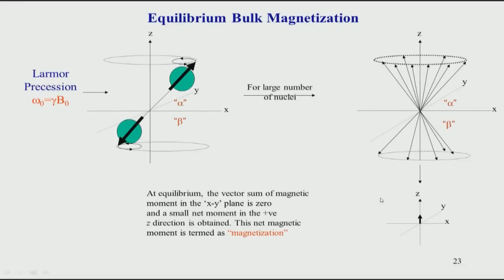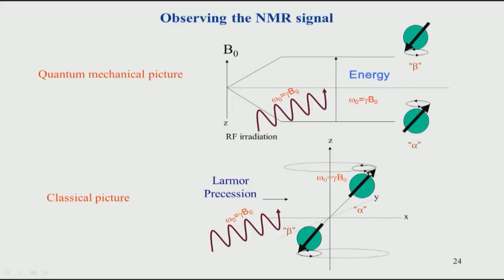Now we will see how we can actually excite these spins and get an NMR signal. For exciting, we saw in the last class that we use the concept of resonance. When you apply an energy exactly equal to the energy gap, the molecules go from the ground state to the excited state. A spin sitting in the alpha state will flip and go into the beta state only when energy is supplied in the same range as the gap in the energy levels. This energy is applied in the form of RF radiation, with a frequency given by omega equals gamma times B0.